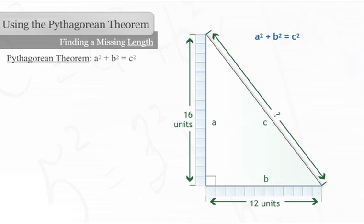To figure out the length of the hypotenuse, we will first plug the lengths of sides A and B into the theorem. 16 squared plus 12 squared equals C squared.